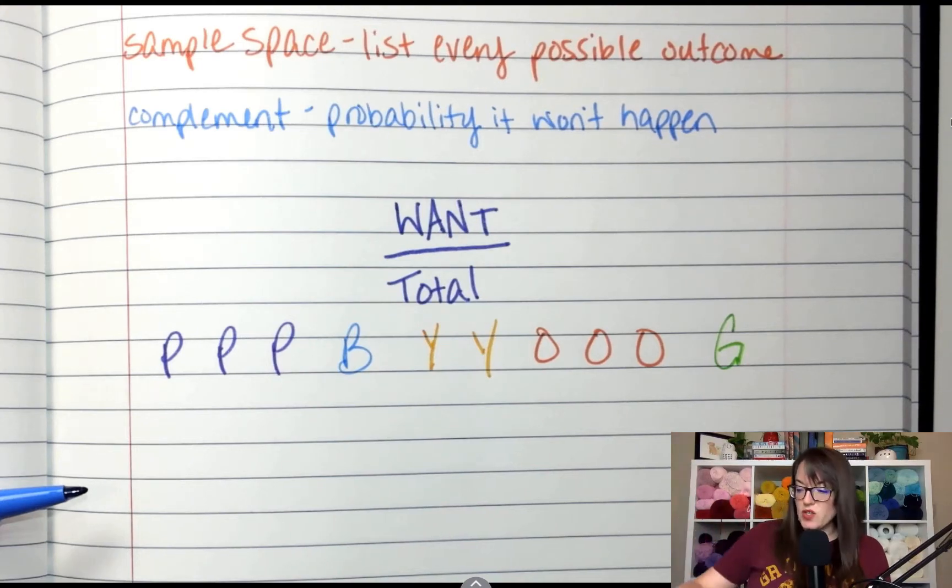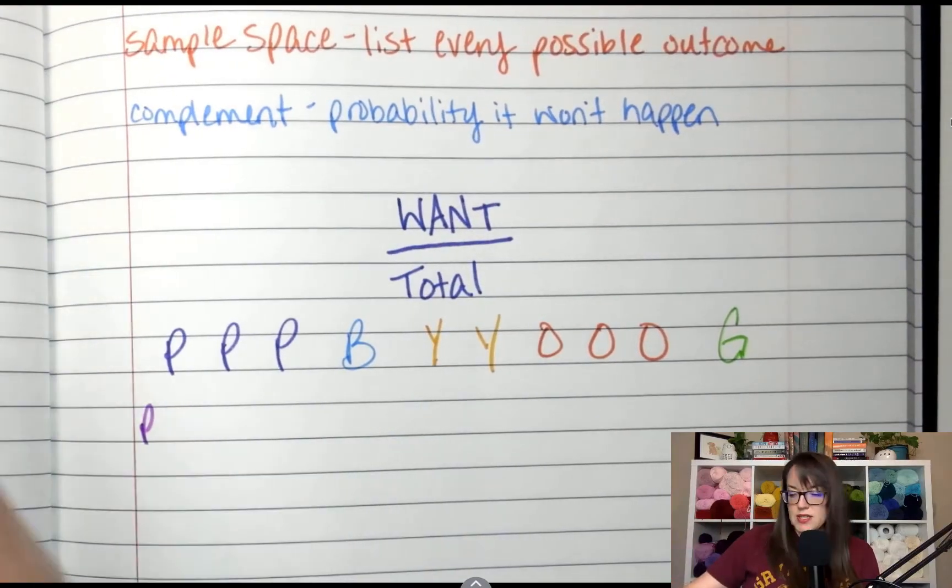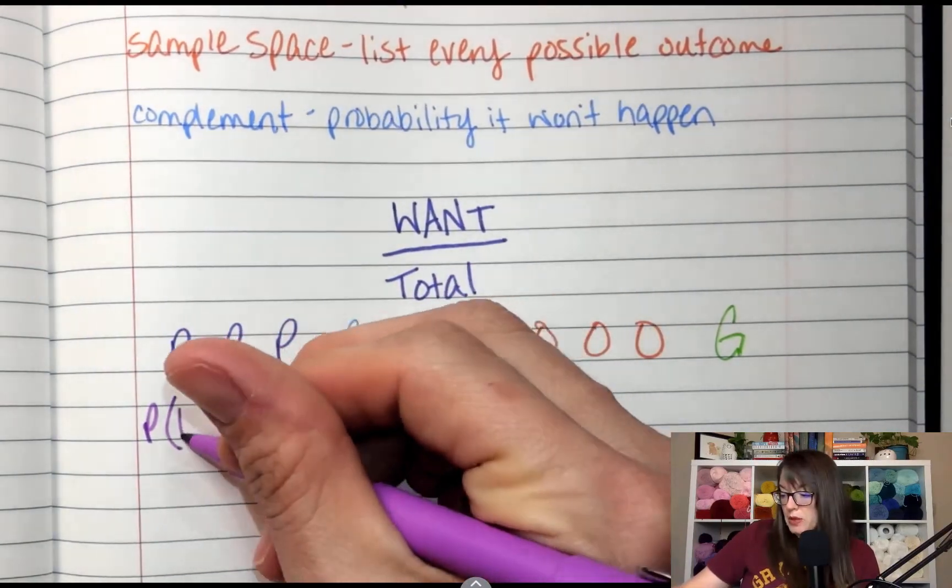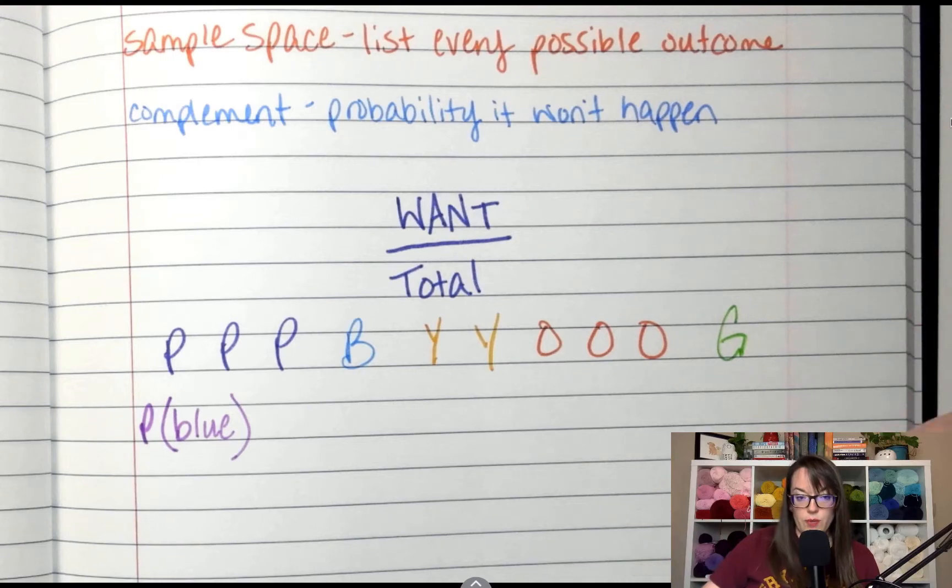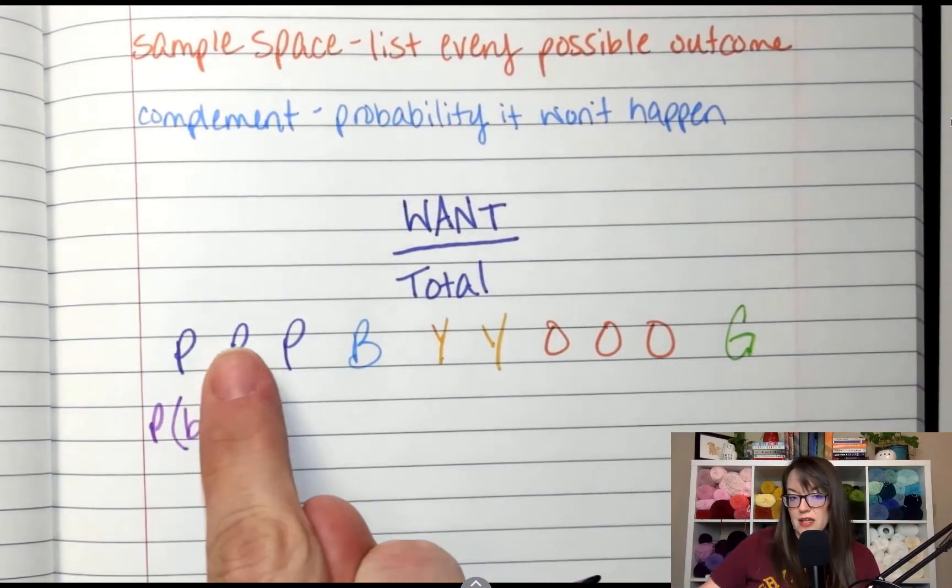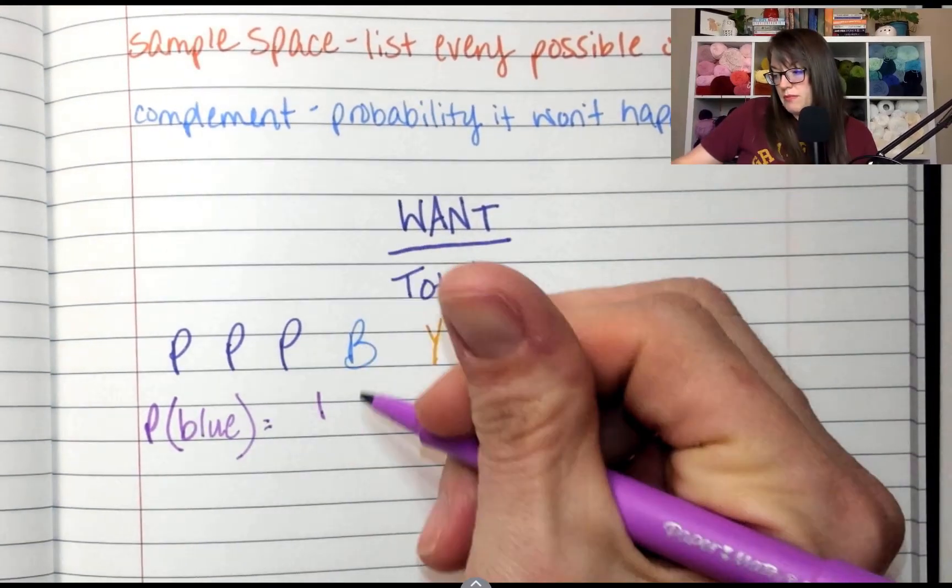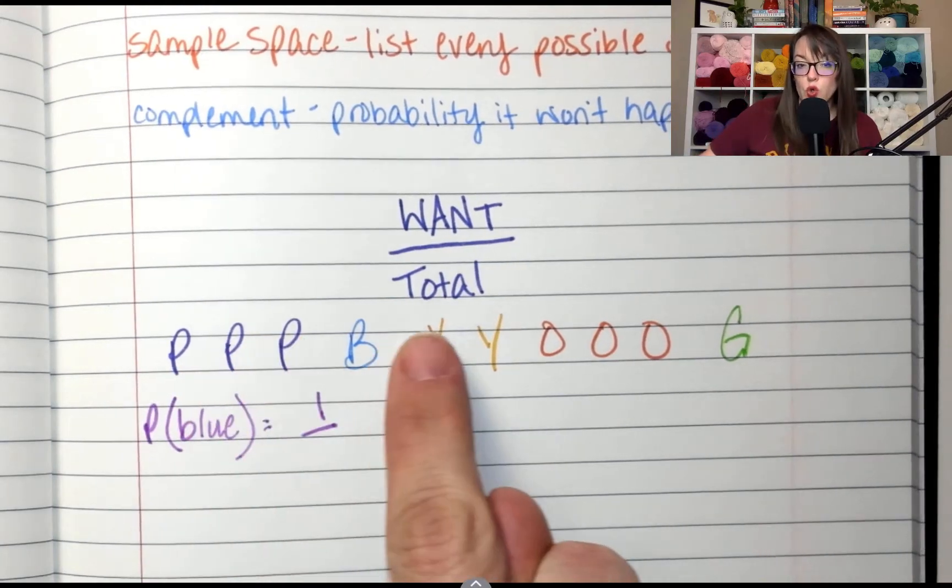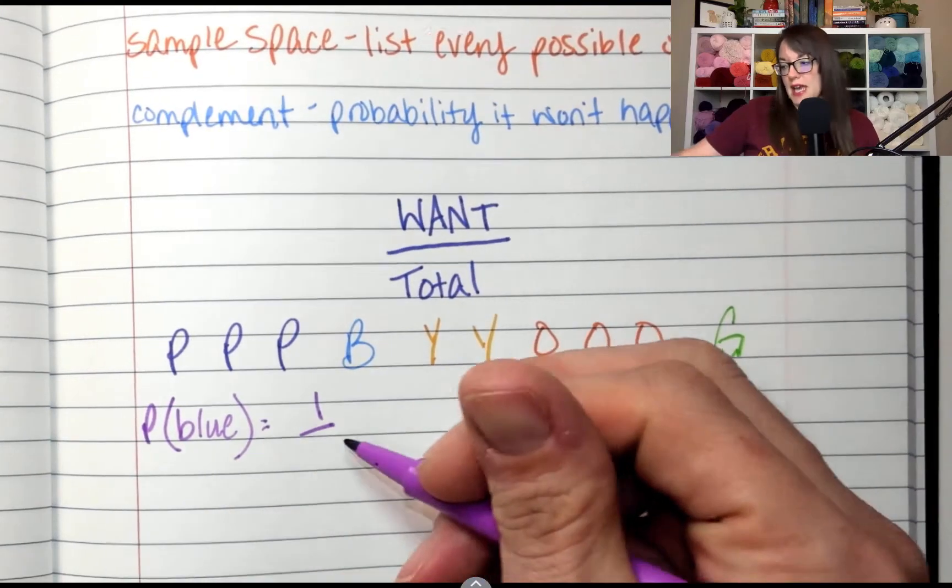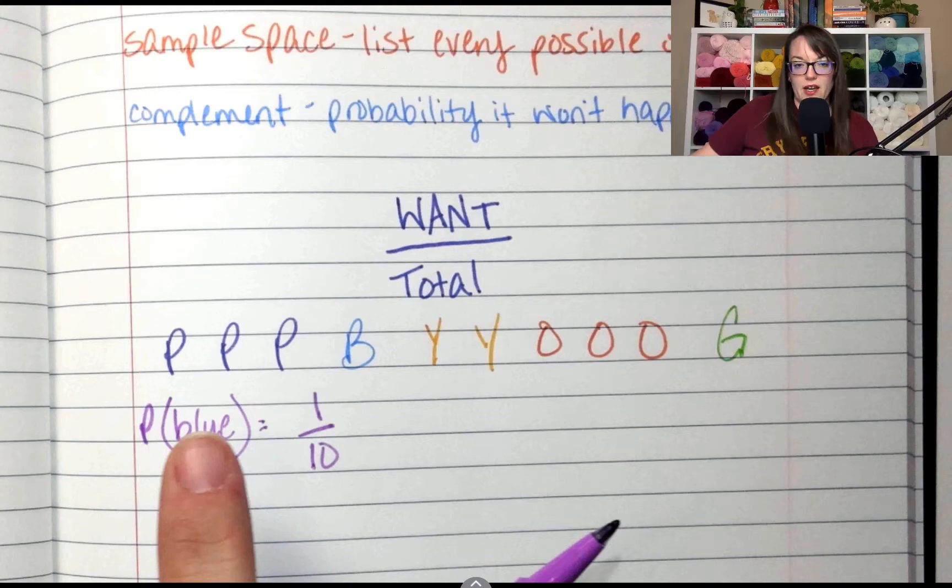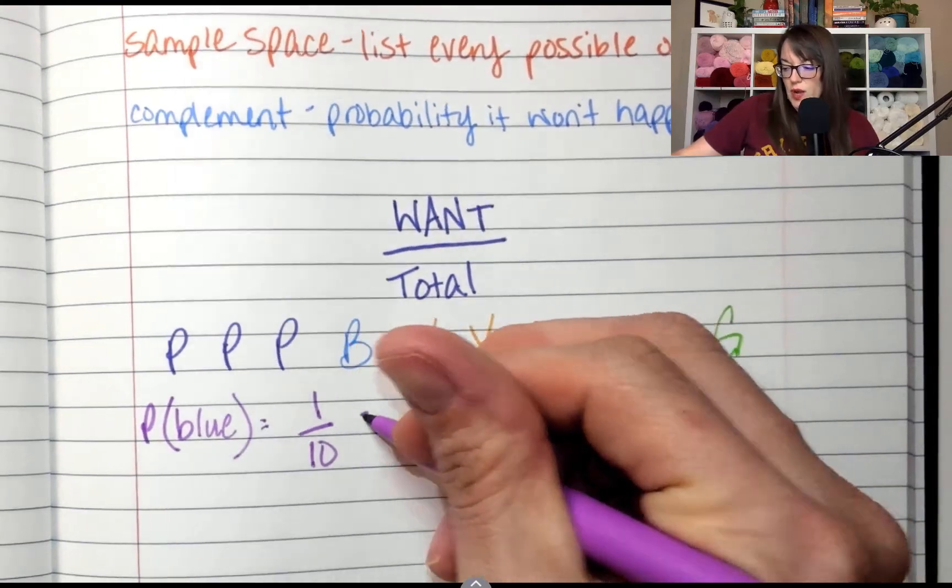All right. So the question is going to ask, what is the probability? And it's going to put a P for probability. So what is the probability of picking blue? So the way I work with probability is what I want to happen out of total possibilities. So how many were blue? There's one blue. How many total are there, including the blue? Absolutely all of these. How many? There are 10. So the probability of picking blue randomly is one out of 10.